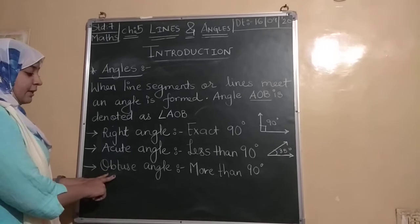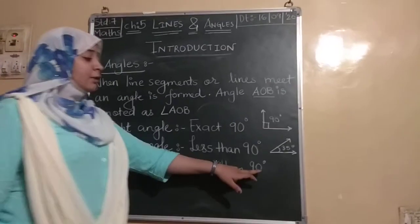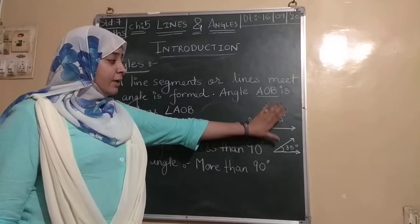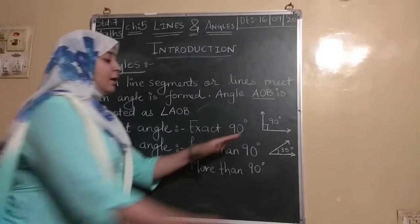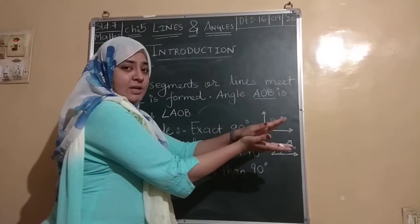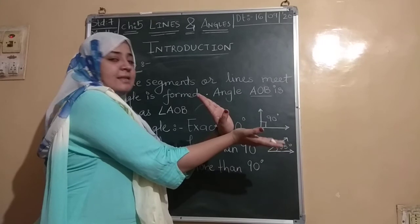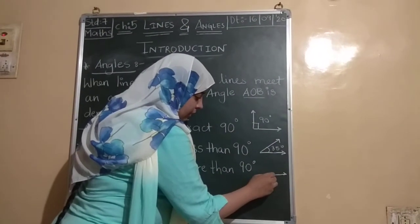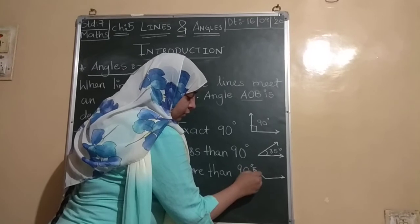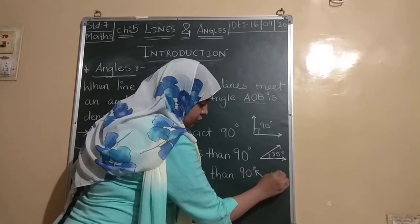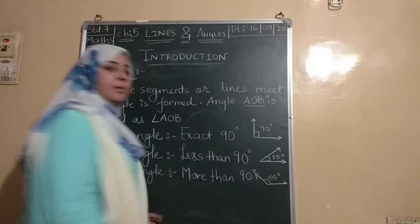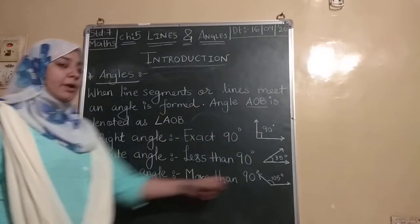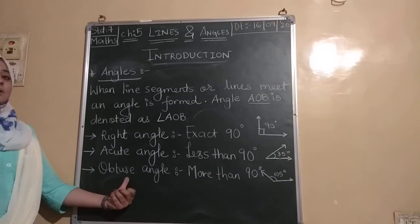Now, obtuse angle. What is obtuse angle? It is more than 90 degrees. That means, it is even bigger than right angle. So obviously, if smaller is like this, then bigger will be like this. So, it will be somehow like this. So, this is 105 degrees. So, obviously, it is greater than 90 degrees. So, this kind of angle is known as an obtuse angle.